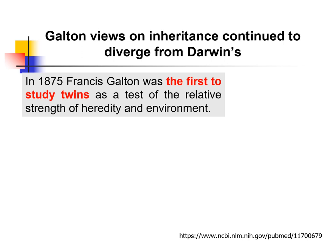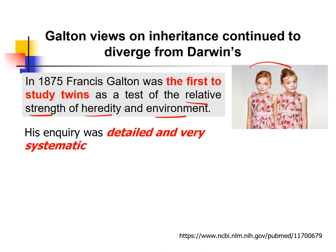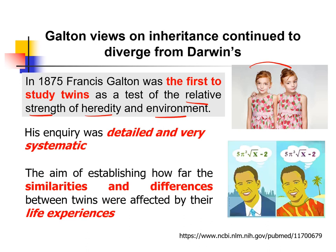When he studied twins, he started comparing heredity and environment in a very systematic way. Something good about his study is that he collected a lot of data and was able to compare it. The idea was to establish how far similarities and differences between twins were affected by their life experiences. Twins are a great example because we can clearly see what results from the environment and what results from genes — although he still didn't know what a gene was, it was a good beginning for human genetics.